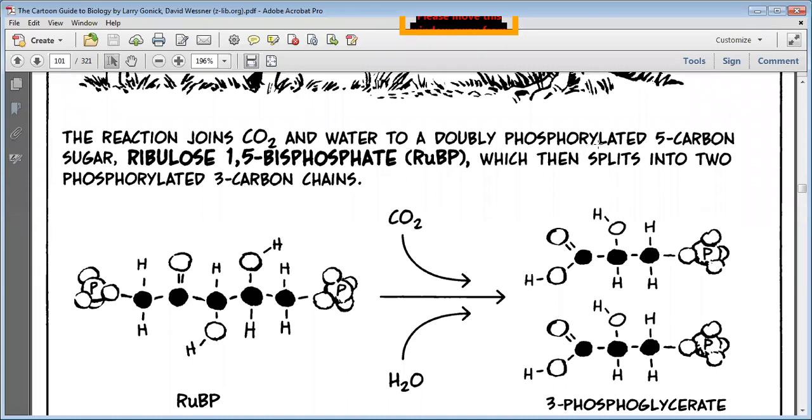Now the reaction joins carbon dioxide and water to a doubly phosphorylated 5-carbon sugar. This is 11th class topic. Here phosphorous, symbol P, is joined by 5 carbons. These two are the phosphorous here. By carbon sugar, RUBP. The full form of RUBP is ribulose 1,5-bisphosphate. This is why it's called bisphosphate, because there are two phosphorous groups, PO4.